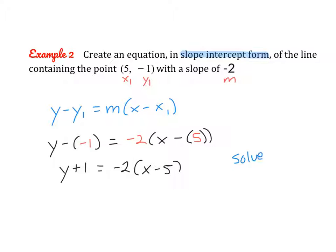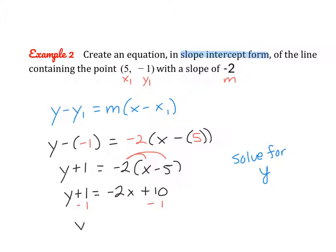Now we need to solve for y. Distribute the negative 2: y plus 1 equals negative 2x plus 10, because negative 2 times negative 5 is positive 10. Then subtract 1 from each side, and we're left with y equals negative 2x plus 9. Our equation is now in slope-intercept form, and we are done.